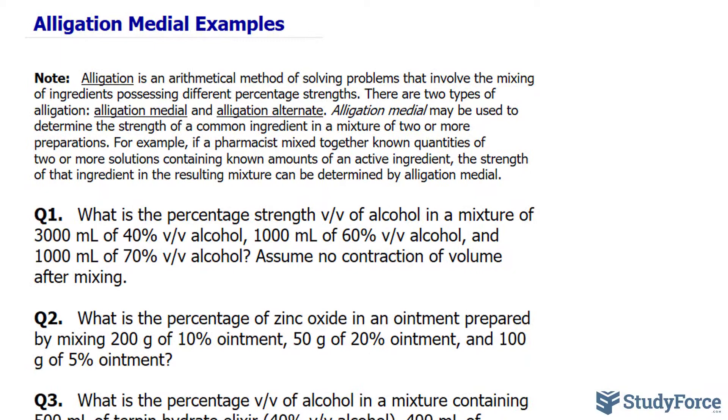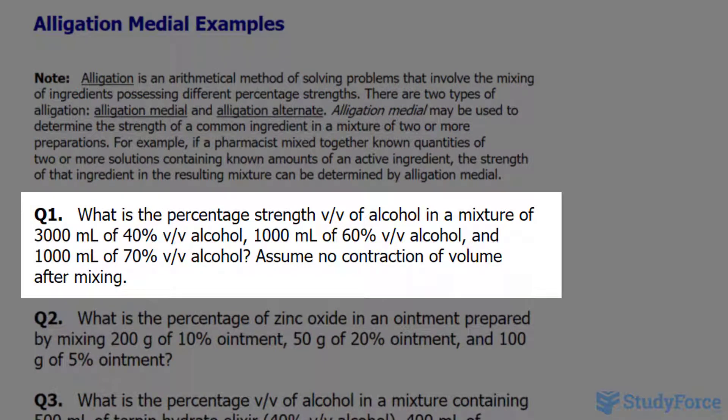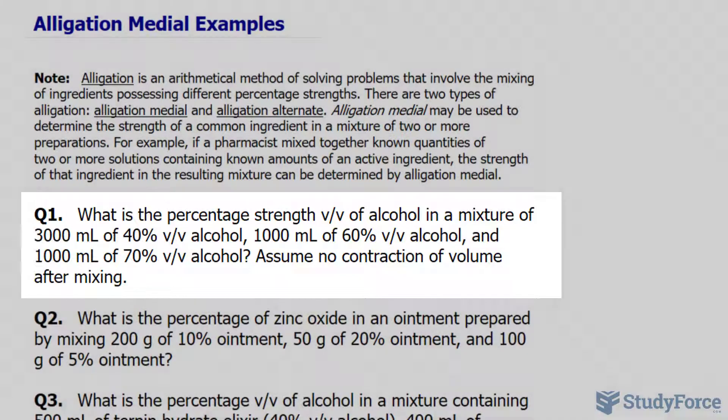So with that being said, let's begin with question number one. What is the percentage strength volume per volume of alcohol in a mixture of 3000 milliliters of 40% v/v alcohol, 1000 milliliters of 60% v/v alcohol, and 1000 milliliters of 70% v/v alcohol?